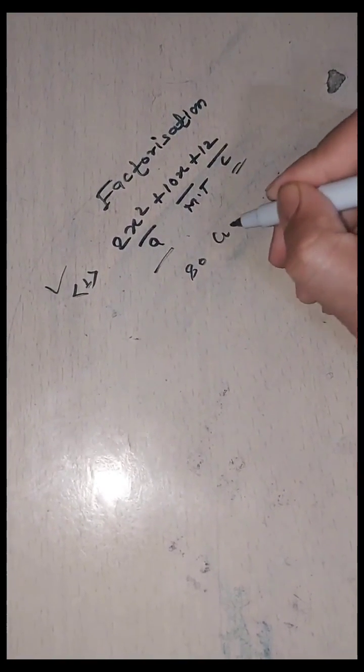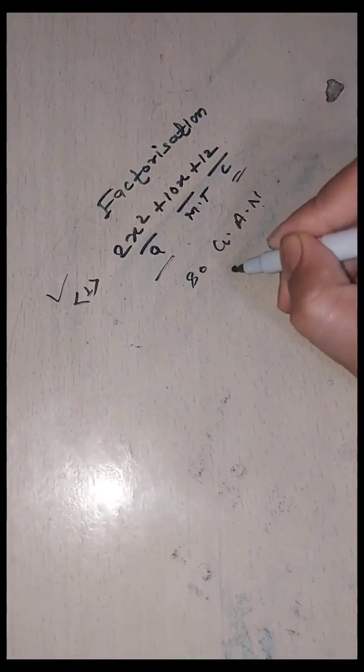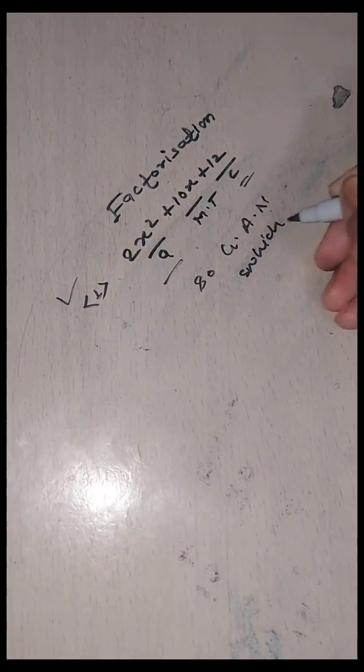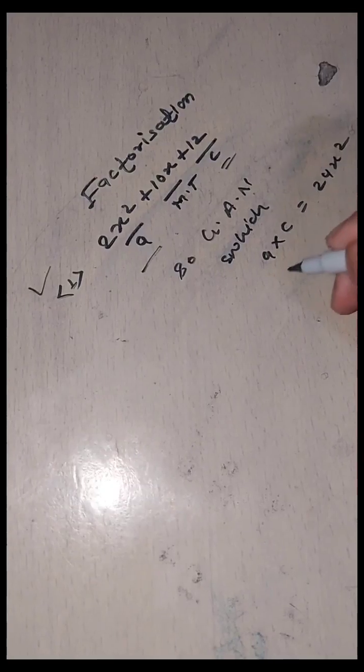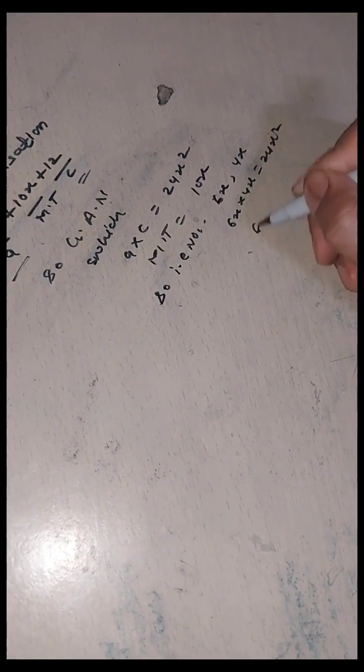We have to guess a number where the first term and last term multiplication gives 24x², and when added, the middle term gives 10x. That number is 6x and 4x. When 6x is multiplied by 4x, it gives 24x², and 6x plus 4x equals 10x.